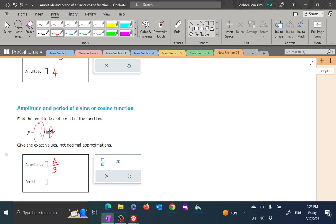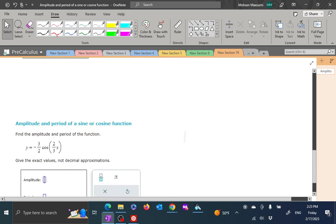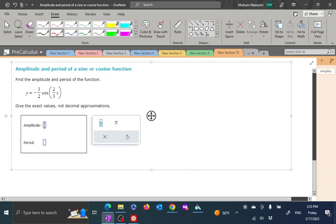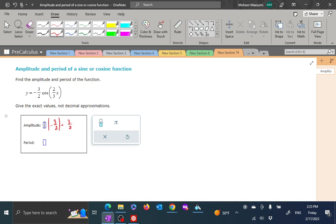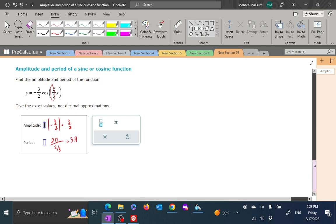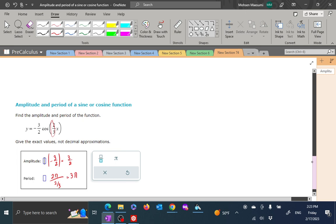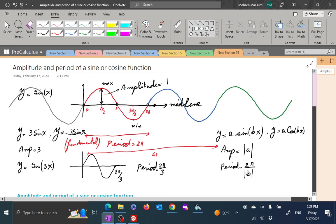Period comes from here, so it's going to be 2 pi over fifth. Amplitude: absolute value minus 3 halves, which is of course just 3 halves. That's what you write. Period: 2 pi divided by the multiple of x, so 2's cancel and you get 3 pi. You're expected to simplify.